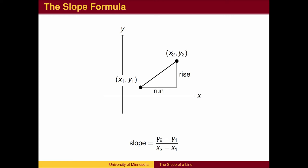In general, the slope between two arbitrary points is given by the slope formula. Y coordinates are subtracted in the numerator. X coordinates are subtracted in the same order in the denominator.